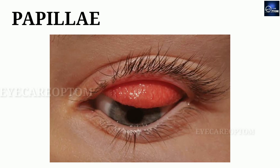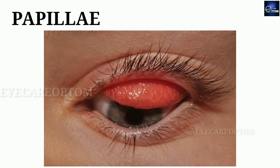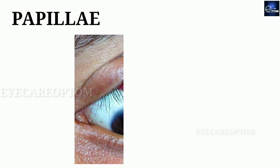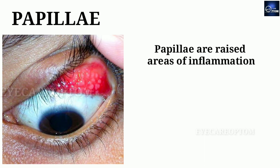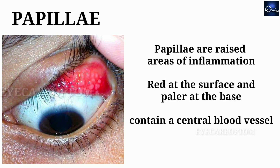Papillae are flat nodules that contain a central vascular core. Basically, papillae are raised areas of inflammation. They are red at the surface and paler at the base, and they contain central blood vessels.